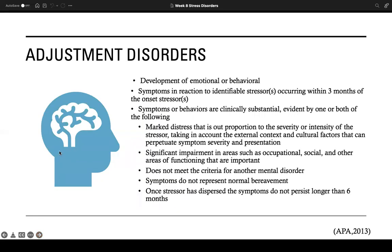Next are adjustment disorders, which are stress-related conditions. You experience more stress than would normally be expected in response to a stressful or unexpected event, and that stress causes significant problems in your relationships, at work, or at school. Work problems, going away to school, an illness, the death of a loved one, family or friendship changes, or any life changes can cause stress. Most of the time, people adjust to changes within a few months. But if you have an adjustment disorder, you continue to have emotional or behavioral reactions that contribute to feeling anxious or depressed.